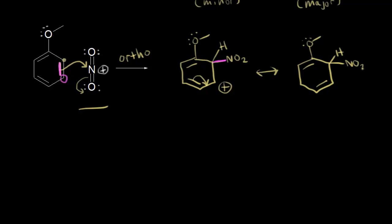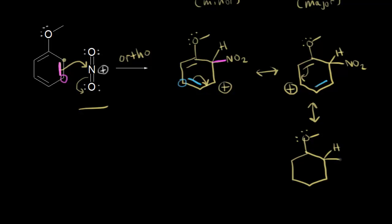In the next resonance structure, we have a hydrogen, an NO2, and we take these pi electrons and move them over to this position, giving a +1 formal charge on that carbon. We can draw another one by moving these pi electrons into the next position. In this structure, we still have the ring, the methoxy group, the nitro group in the ortho position, and these pi electrons. Moving those electrons over gives a +1 formal charge on this carbon.